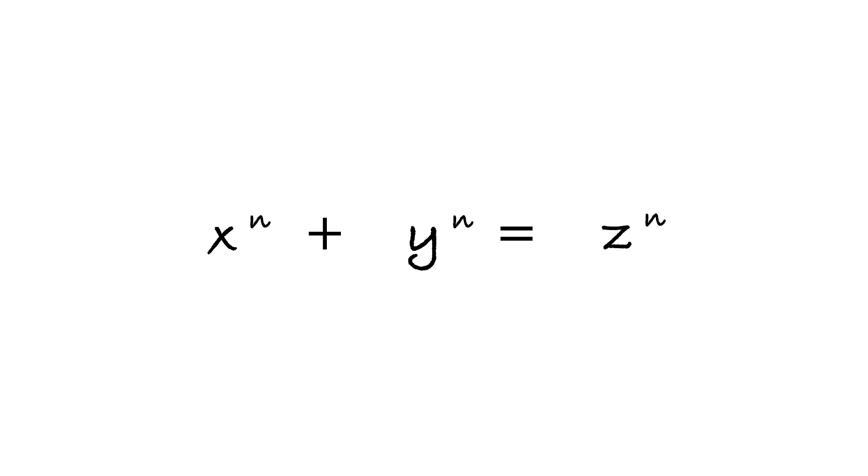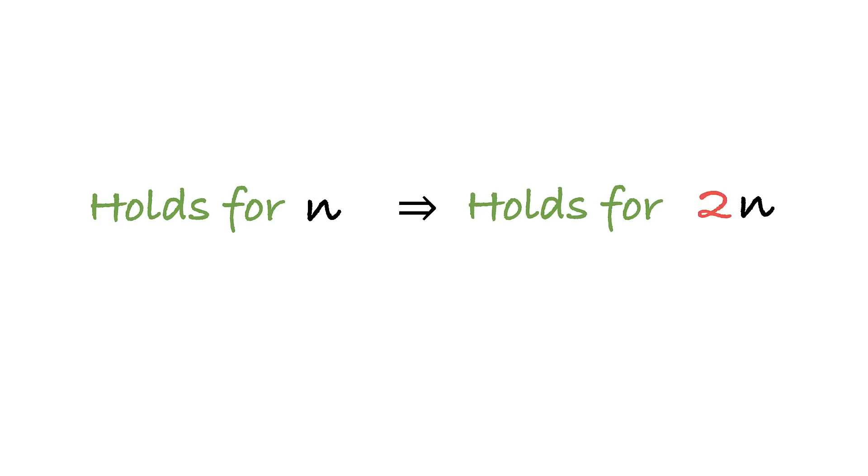Let's get started. First, in Fermat's equation we can legitimately assume that x, y, and z don't have common divisors. Because if any two of them had a common divisor r, then so would the third one, and we could divide both sides of the equation by r to the n and get an equation with new numbers that don't have any common divisors left.